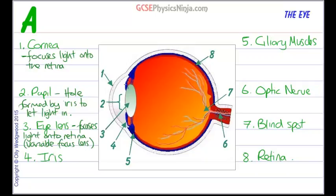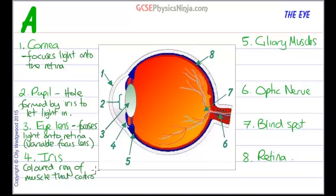Number 4 is the iris, which is the coloured ring of muscle that can contract or relax to change the shape of the pupil — making the hole larger or smaller to let more or less light in. So the iris controls the amount of light entering the eye.